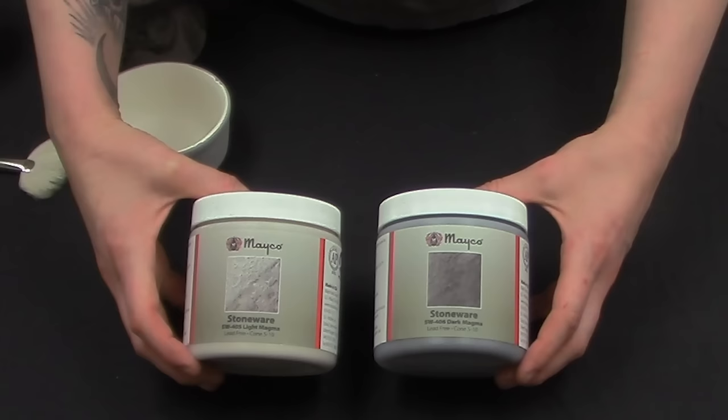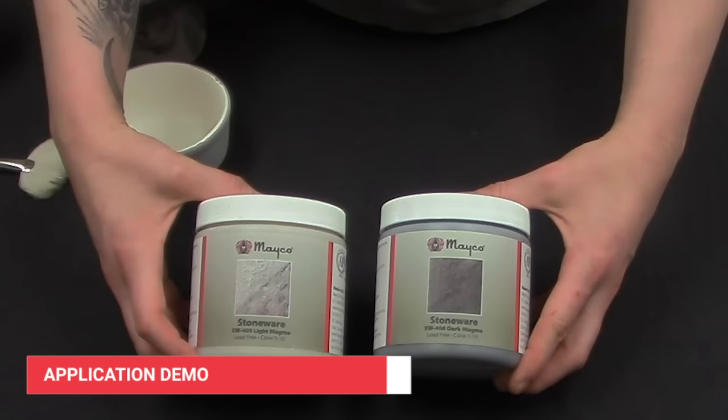Here we have two of Mako's new texture products: light magma and dark magma. These glazes produce a cratering effect.